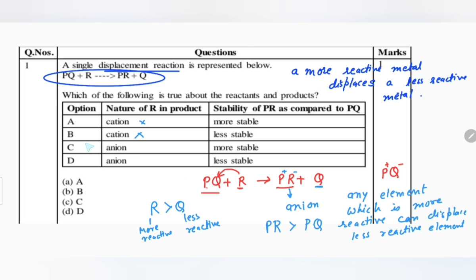So here which option will be correct? C, anion, yes. And stability, if we see more stable, so here the C option is correct. D is wrong because here it is written less stable which is wrong. How can we say it is more reactive? Because R could take the place of Q, because R is more reactive than Q and forms PR, whereas Q which is now left here cannot displace R, so PR is more stable. I hope you understood it well.